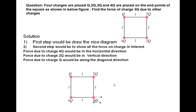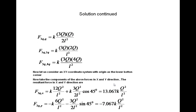Now we know the directions of the forces. The next step is to find the magnitudes using Coulomb's law. The force due to Q on 3Q is K·(3Q)·Q / (√2·L)², which becomes K·3Q²/(2L²). The force due to 2Q on 3Q is K·(3Q)·(2Q) / L², and the force due to 4Q on 3Q is K·(3Q)·(4Q) / L², since the distance between those charges is L.